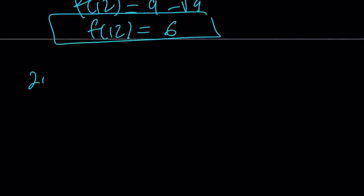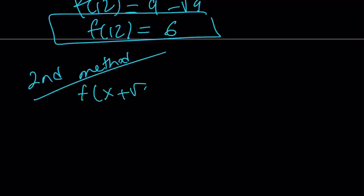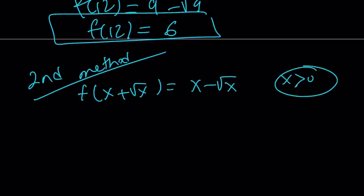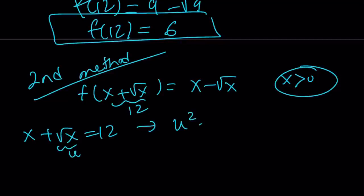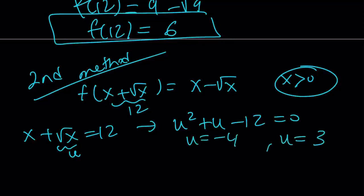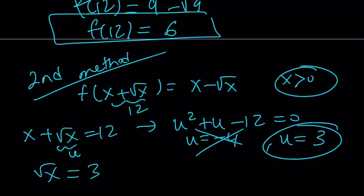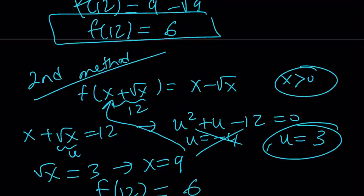Let's talk about the second method, which is definitely shorter and much better — but no pain, no gain. In this case we know x must be positive and we want to find f of 12, so why not set x plus square root of x equal to 12 directly? Replacing square root of x with u, we get u squared plus u minus 12 equals 0. This gives u equals negative 4 and u equals 3. Since square root of x equals u must be positive, we reject negative 4 and go with u equals 3, so square root of x equals 3 and x equals 9. Replacing x with 9 on both sides gives f of 12 equals 9 minus 3 equals 6. Same answer, obviously much shorter. The first method is super-duper painful, but at least it gives you an application of the quadratic formula and two equations with two variables.